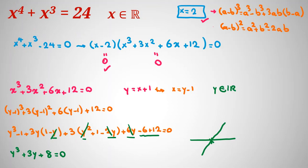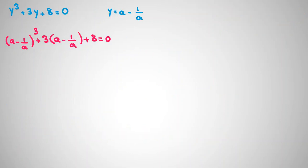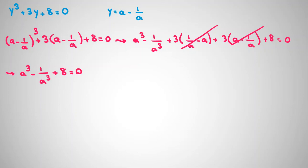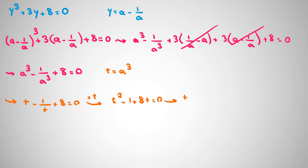After expanding, we get a cubed minus 1 over a cubed plus 3 times 1 over a minus a plus 3 times a minus 1 over a plus 8 equal to 0. The middle terms cancel, leaving a cubed minus 1 over a cubed plus 8 equal to 0. Now I set t equal to a cubed, so the equation becomes t minus 1 over t plus 8 equal to 0. Multiplying both sides by t gives t squared plus 8t minus 1 equal to 0.